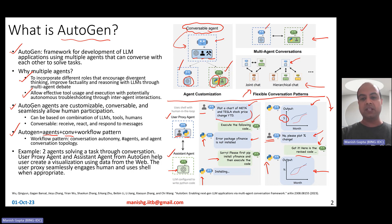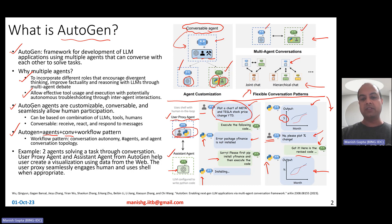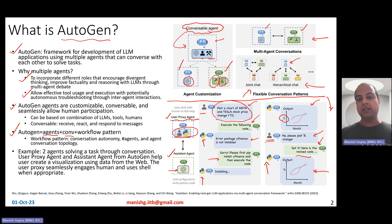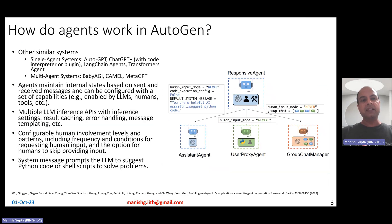In this case, the topology consisted of just two agents solving a task through conversation. The task was to draw a plot using data from the web. The user proxy agent essentially has two tools: the human tool and the Python executor tool. It can seamlessly engage a human or use the shell whenever it finds appropriate.